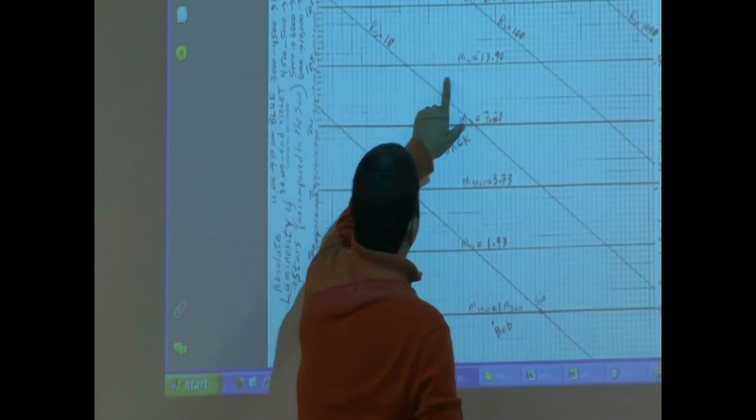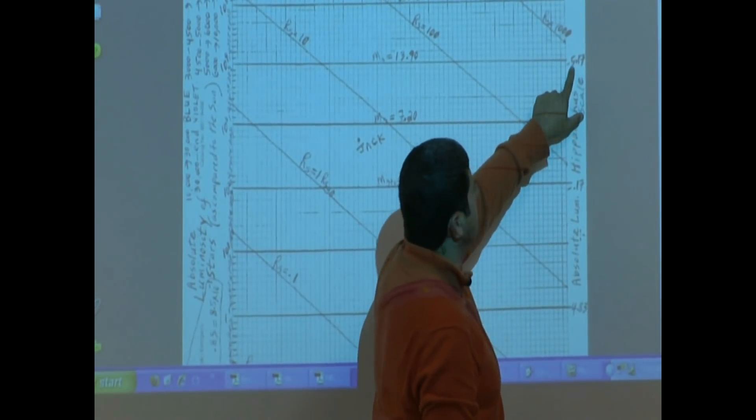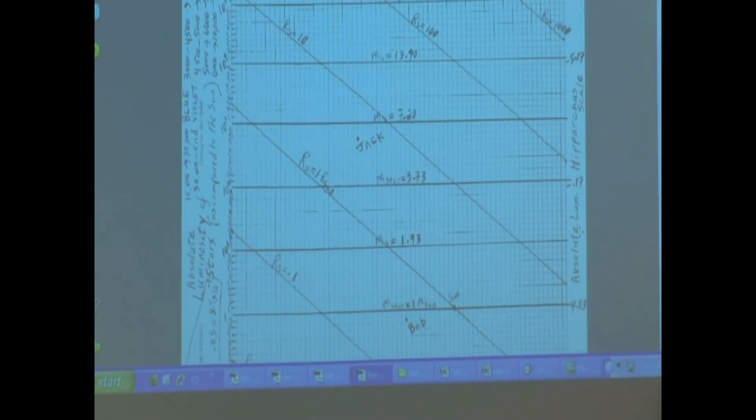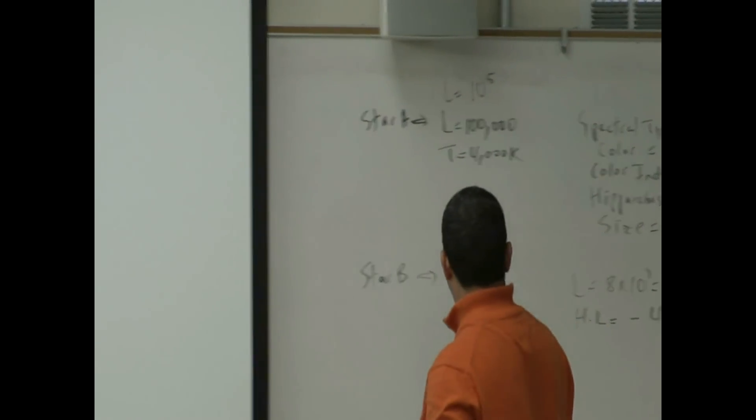It was here. Now if we go to the other side, what is the Hipparchus scale? About a negative 4, let's say. Not quite negative 5. So the Hipparchus scale luminosity, Hipparchus luminosity, negative 4.